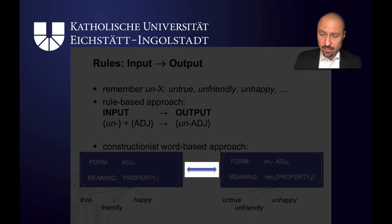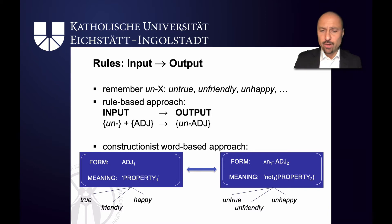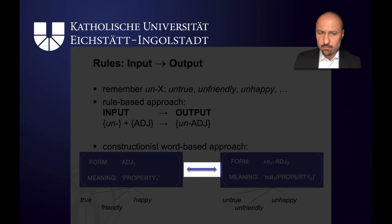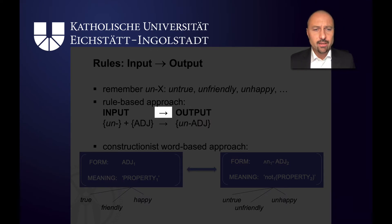In the constructicon — the mental network of constructions — these two schemas are linked through a bi-directional arrow. So it's not the case that one is the input and the other is the output, even though children will learn one of these schemas earlier than the other. But once they exist, this is a two-way street. That's why the bi-directional arrow is important, in contrast to the one-directional arrow that goes from input to output in the rule-based approach.